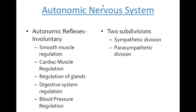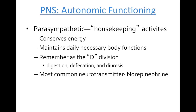Within the autonomic nervous system we have two subdivisions: the sympathetic division and the parasympathetic division. Our parasympathetic division maintains our housekeeping or homeostatic activities — in fact, the majority of you are likely in a parasympathetic response right now. This is where we regulate our smooth muscles to do things like digest, defecate, and diuresis (making urine) — things that maintain necessary body function and homeostasis.